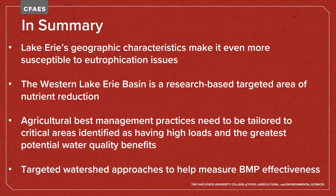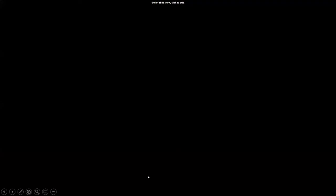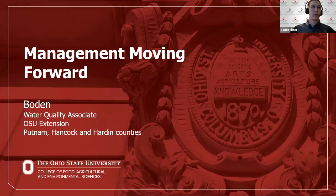In summary, Lake Erie's geographic characteristics make it even more susceptible to eutrophication issues, and specifically the western Lake Erie basin is a research-based targeted area for nutrient reduction. Agricultural best management practices need to be tailored to critical areas identified as having both high nutrient loading and the greatest potential water quality benefits — using sub-basins and HUC-12s to narrow down and implement targeted practices. This targeted watershed approach leads to better measurement of BMP effectiveness and better allocation of limited monetary resources.